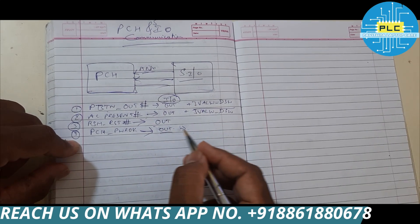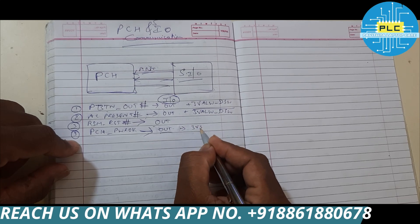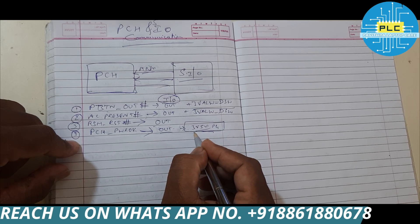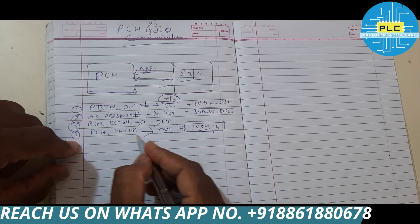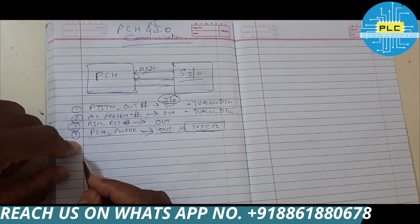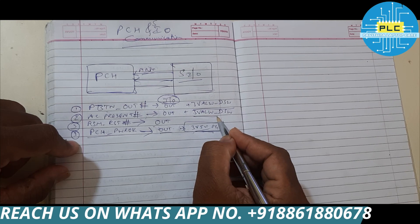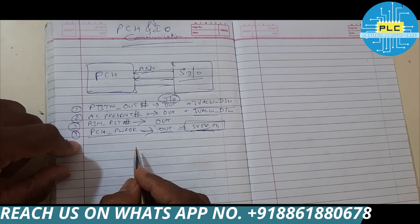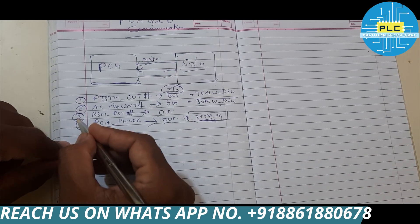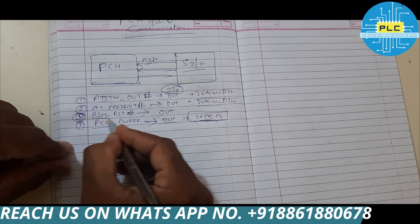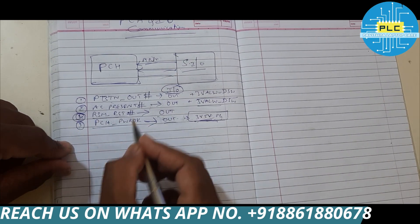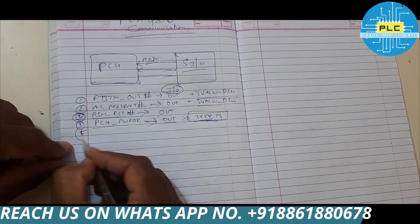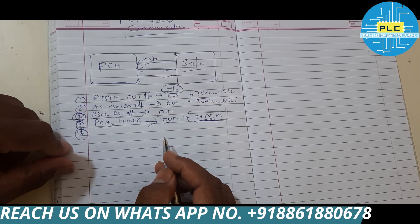PCH Power will output when three volts and five volts power good appears. Once the three volts and five volts PG signals appear, then this signal will come out. So this signal operates on three volts always, and the other is three volts/five volts PG. Next signal, which is the fourth one, may be RSMRST.